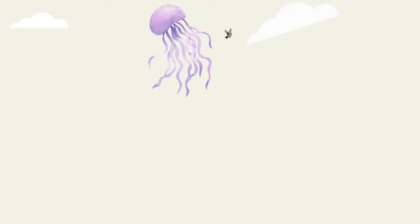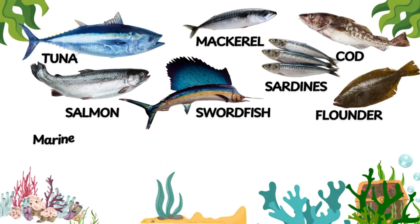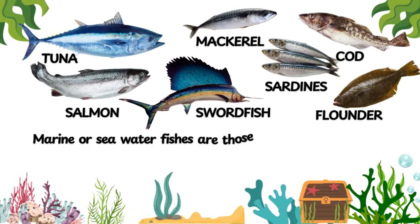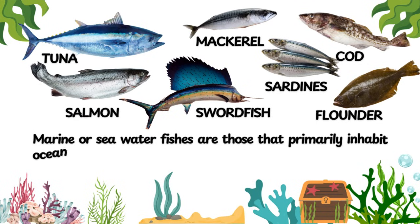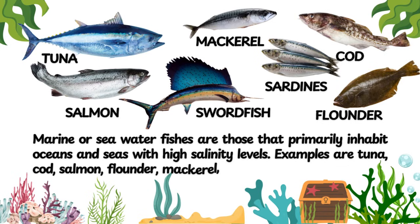Marine or Open Sea Fishes. Marine or seawater fishes are those that primarily inhabit oceans and seas with high salinity levels. Examples are tuna, cod, salmon, flounder, mackerel, swordfish, and sardines.